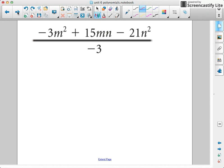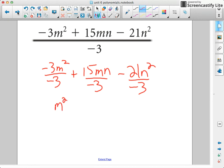It works for 3 terms as well. Negative 3m squared divided by negative 3 plus 15mn divided by negative 3 minus 21n squared divided by negative 3. So negative 3 divided by negative 3 is 1m squared, so I just could write m squared. 15 divided by negative 3 is negative 5, so I could put minus 5mn. And negative 21 divided by negative 3 is positive 7n squared. That is how we simplify expressions.